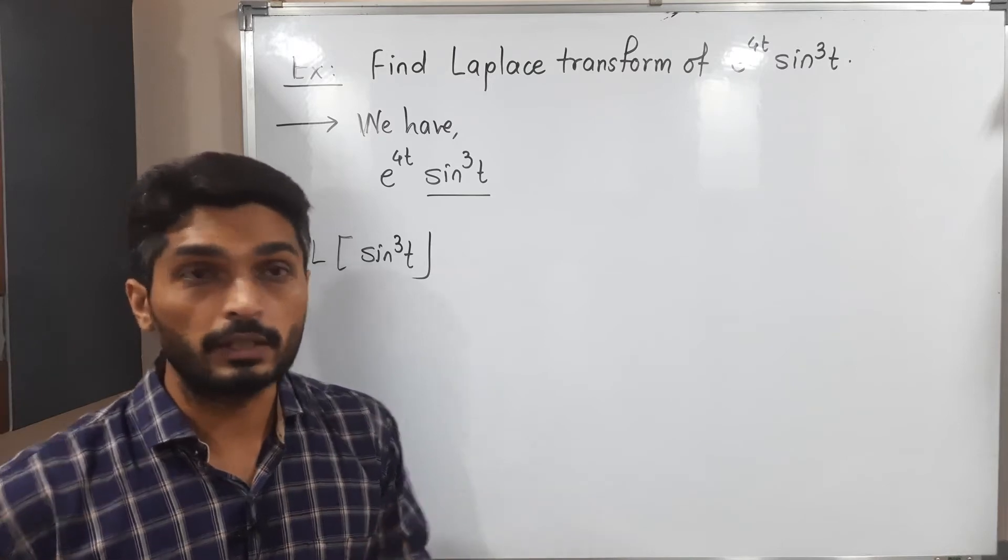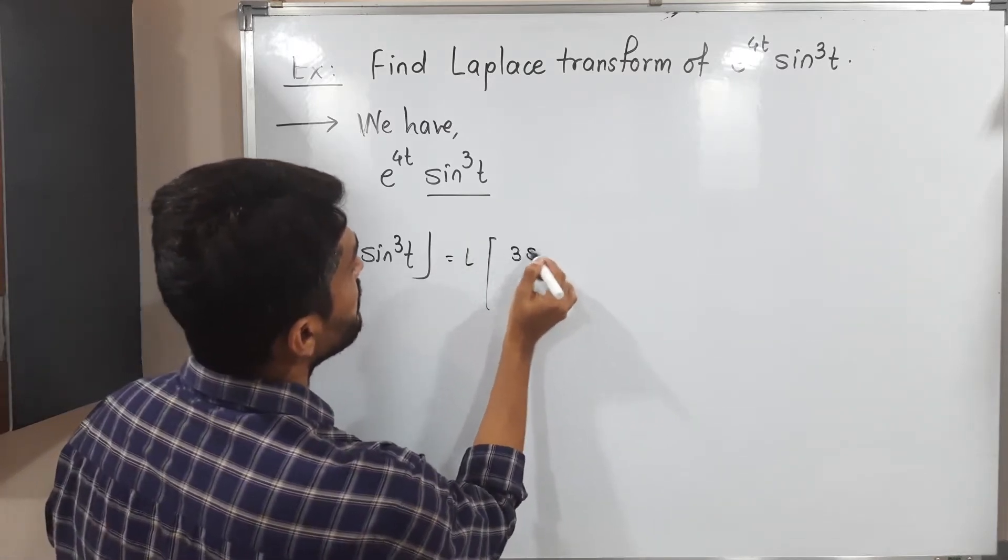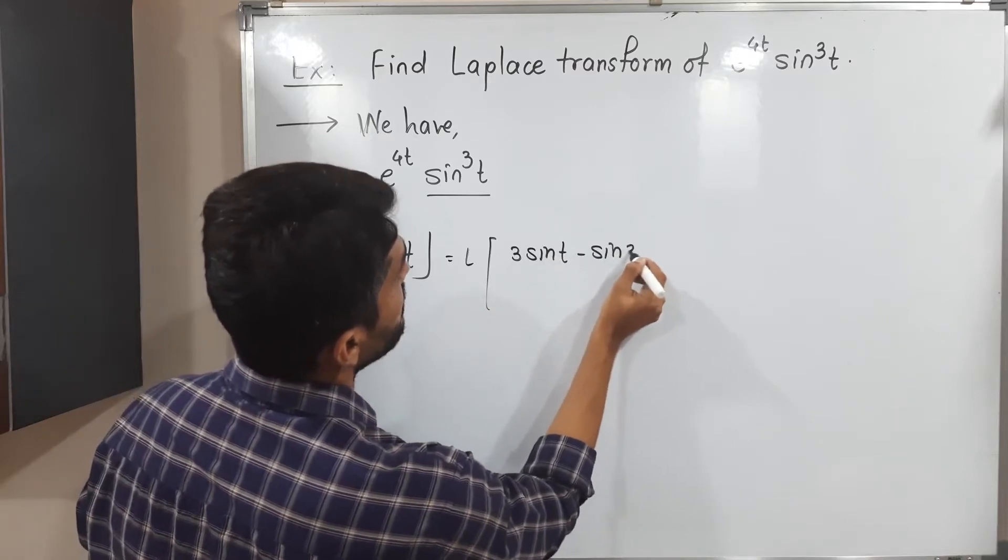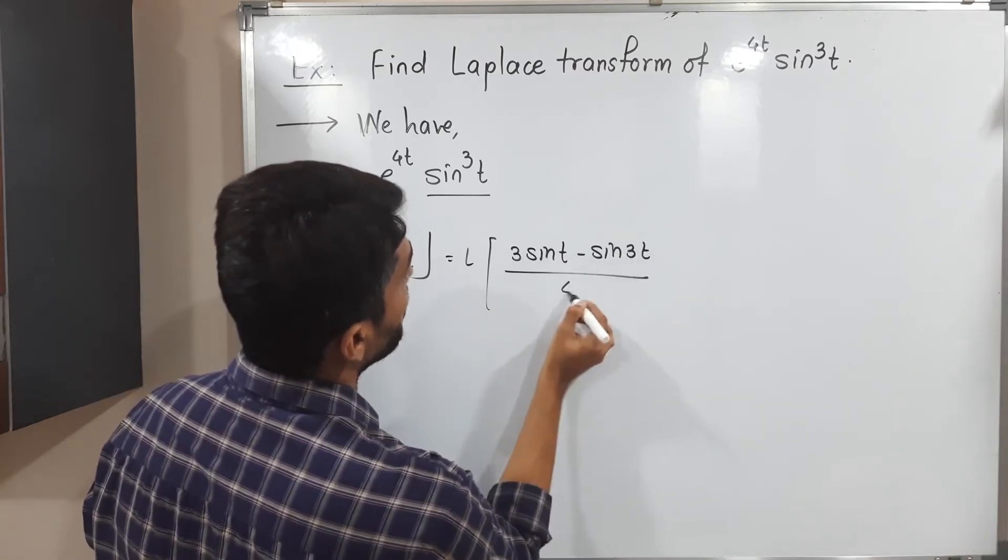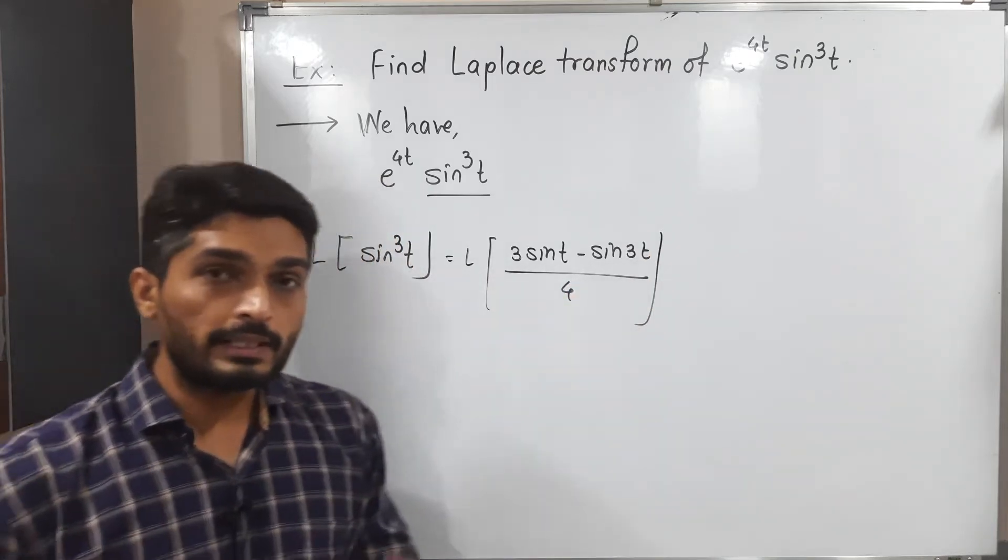You know, what is formula of sin cubed t? So that formula is, it is 3 sin t minus sin 3t divided by 4. So we express sin cubed t in this way. So now it is easy to calculate.